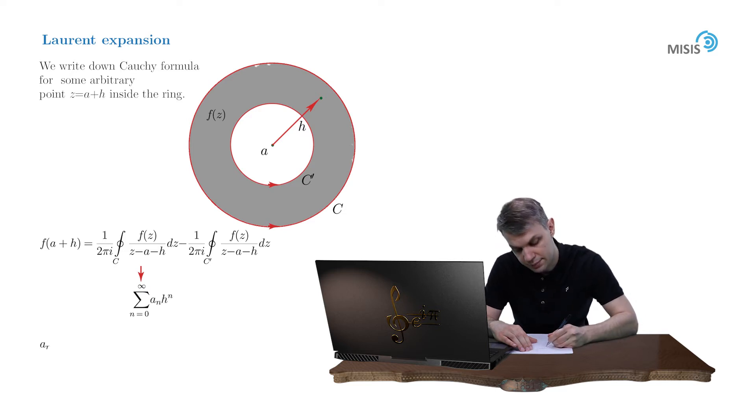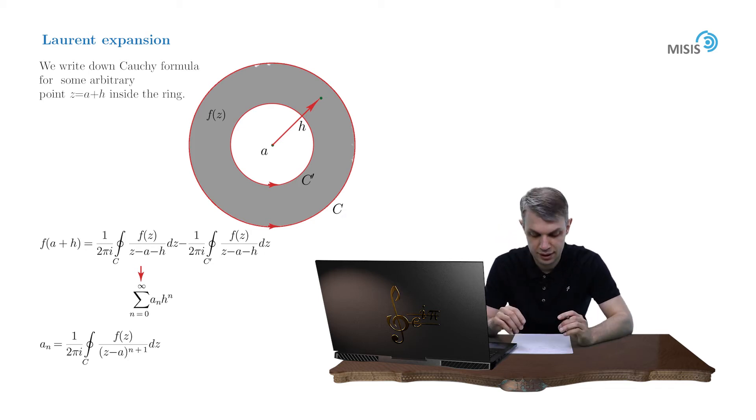And let's rewrite here the expression for An coefficients, which are now familiar for you from the previous video: F of Z over Z minus A to the power of N plus 1, DZ. Now pay attention that I don't reduce this integral into a nice expression via N's derivative of the function. And there is a good reason for this, and I'll explain it to you in a couple of minutes.